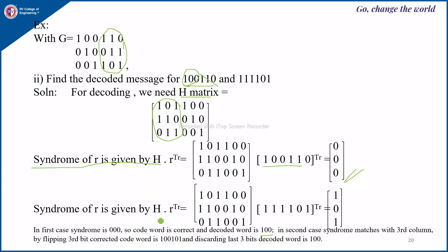For the second received message, H into R-transpose gives 1,0,1, which is not zero, so there is an error in the received message — some bits may have been flipped. It is not a correct code word. To find the correct code word, check whether 1,0,1 matches any column of H. It matches the third column, meaning we flip the third bit of the received message. The correct code word becomes 1,1,0,1, and by dropping the last three bits, the decoded message is 1,1,0.